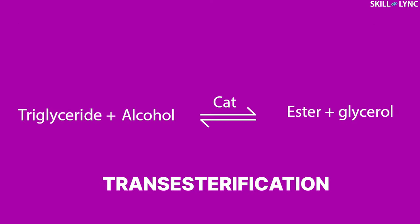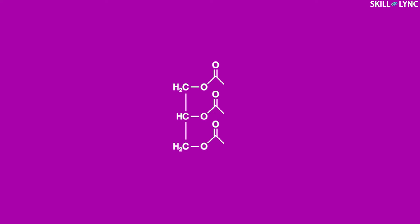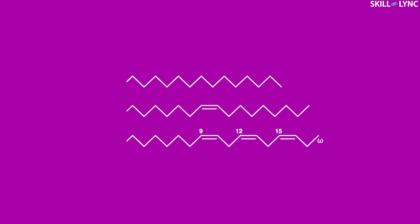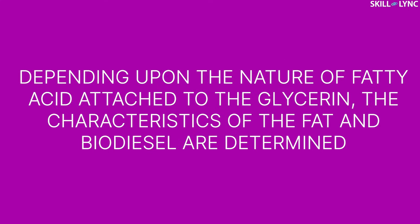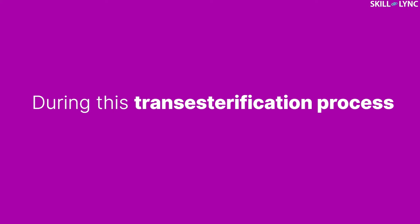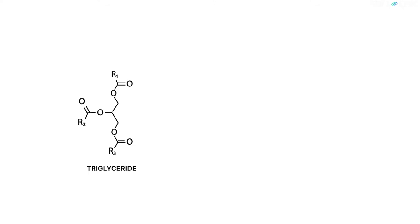The reaction of triglyceride with alcohol to form an ester and glycerol is called the transesterification process. Triglycerides are types of fat or oil that have a glycerin acid base and three long-chain fatty acids attached to it. Depending upon the nature of the fatty acid attached to the glycerin, the characteristics of the fat and biodiesel are determined. During this transesterification process, the triglycerides are made to react with alcohol like methanol or ethanol in the presence of a catalyst like potassium or sodium hydroxide.